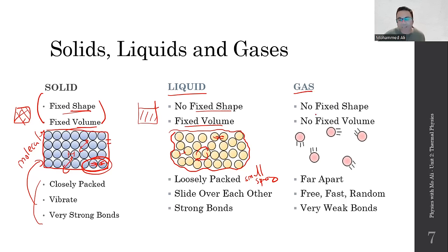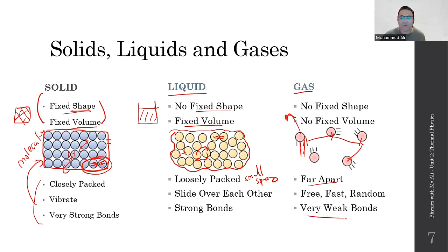Gases have no fixed shape and no fixed volume. In terms of molecules, they have very large spacing, and they move very freely and fast at high speeds and randomly — because they have very weak, or virtually no, bonds. That's the key difference between the three states.